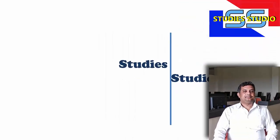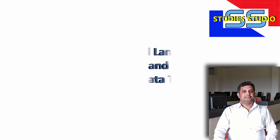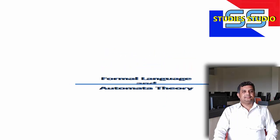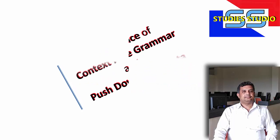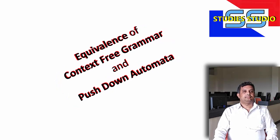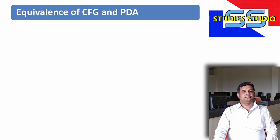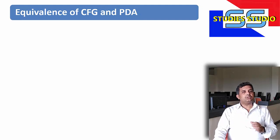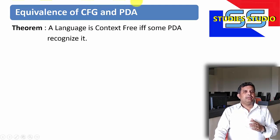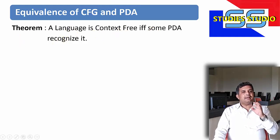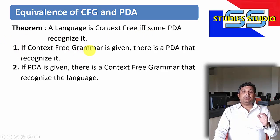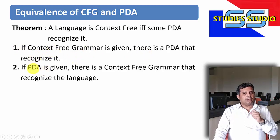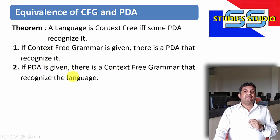Let us start. When we talk about equivalence of context-free grammar and PDA, there is a theorem which says a language is context-free if and only if some PDA recognizes it. It means for a given context-free grammar, we need to have a PDA that recognizes it. And if a PDA is given, there is a context-free grammar that recognizes this particular language.